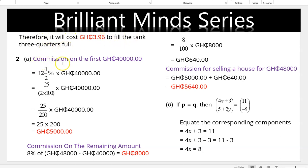Commission on the first 40,000 Ghana cedis: 12.5% of 40,000 = 25/2 × 1/100 × 40,000, which simplifies to 5,000 Ghana cedis. For the remaining amount: 48,000 minus 40,000 equals 8,000. We calculate 8% of 8,000 to get 640 Ghana cedis. Therefore, total commission for selling a house for 48,000 Ghana cedis is 5,000 plus 640, which equals 5,640 Ghana cedis.